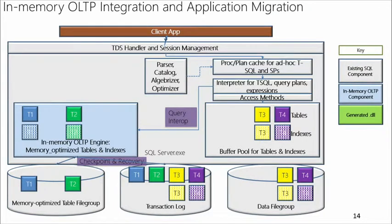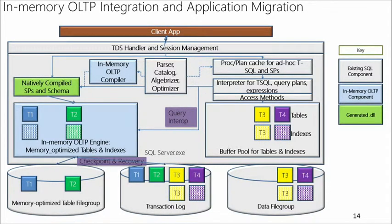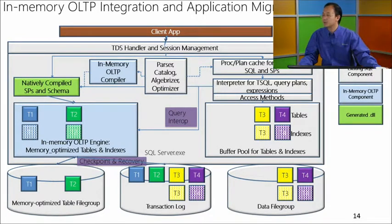However, query interop mode is not the fastest way to use in-memory OLTP. The fast path is natively compiled stored procedures. We have our own compiler that compiles business logic and operations like joins into a native DLL running at native speed. In the current SQL Server 2014 version, natively compiled stored procedures can only access in-memory OLTP tables, but this is the fast path for both business logic and data access.